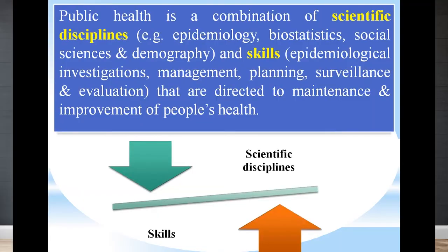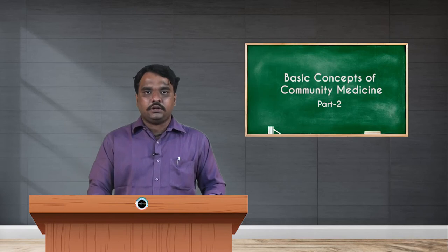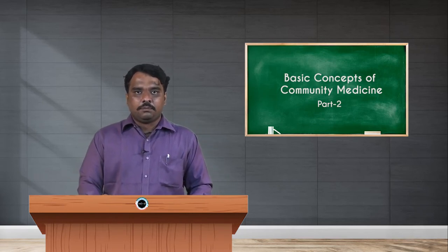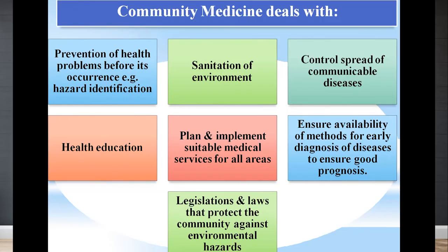Public health is a combination of scientific disciplines and skills. Scientific disciplines include epidemiology, biostatistics, social science, and demography. Skills include epidemiological investigations, management, planning, surveillance, and evaluation. When these two aspects — scientific disciplines and skills — are balanced, the public is considered healthy. Both must go hand in hand for good public health.